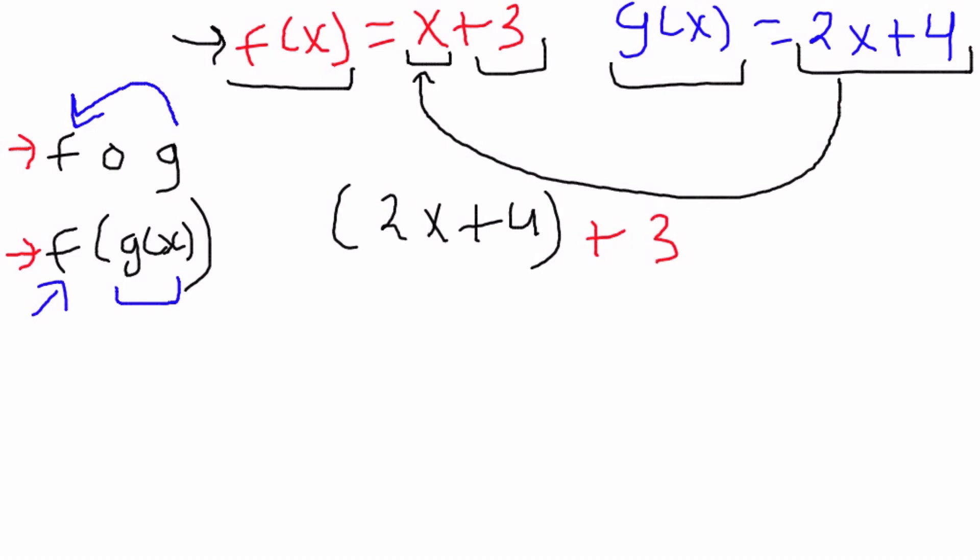Now we go ahead and combine like terms. So in front of this set of parentheses we could just drop this set of parentheses because there's nothing in the front. So we have 2x plus 4 plus 3. Now the like terms here are the 4 and the 3, so 4 plus 3 gives us a 7, a positive 7, and we're just going to drop our 2x.